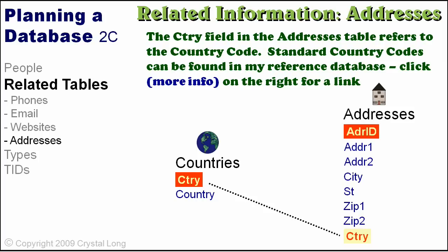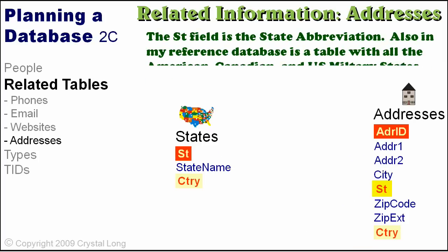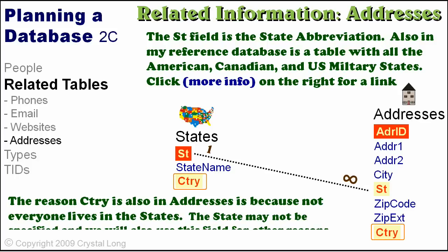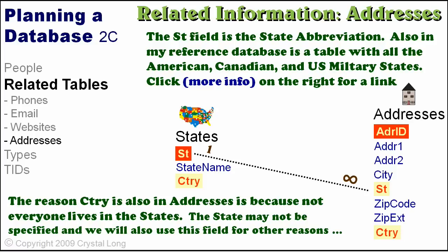There is a one-to-many relationship between countries and addresses. The ST field is the state abbreviation. Also in my reference database is a table with all the American, Canadian, and U.S. military states — click More Info on the right for a link. There is a one-to-many relationship between states and addresses. The reason country is also in the addresses table is because not everyone lives in the states, and the state may not be specified.